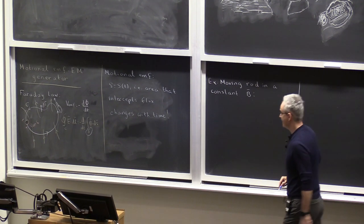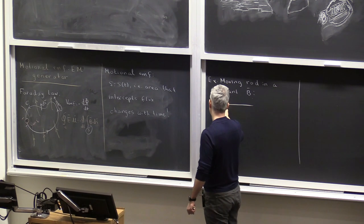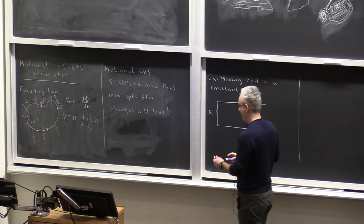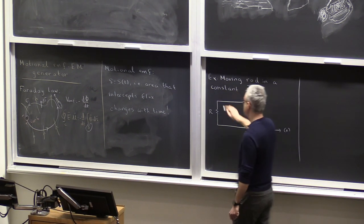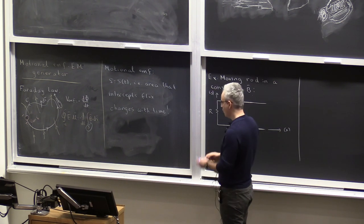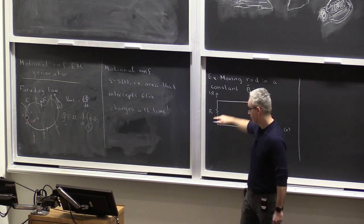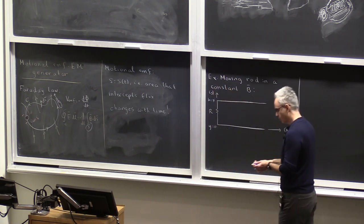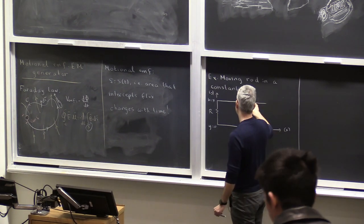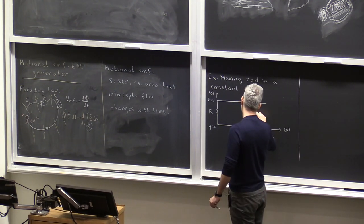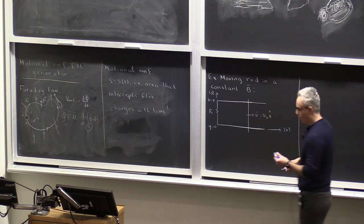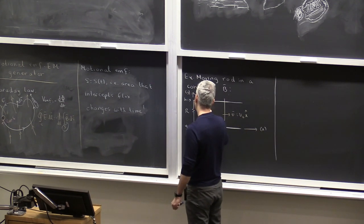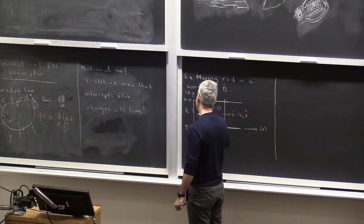So this is the example. We have a circuit with a resistor R. To define a coordinate system, X and Y: the height of the circuit is H, and there is a moving rod with constant velocity V within a constant magnetic field. Let that magnetic field be in the Z direction, so it comes out of the board.